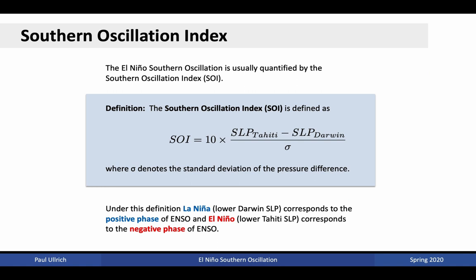The state of ENSO is usually quantified using an index such as the Southern Oscillation Index, although other indices are available that rely on variables such as sea surface temperature. The Southern Oscillation Index takes advantage of the fact that the sea level pressure minima and maxima shift during La Niña and El Niño conditions. Under La Niña conditions, we typically have lower sea level pressures in Darwin and higher sea level pressures in Tahiti. Darwin is our representative location in the western Pacific, over the maritime continent. Tahiti is our representative location for the central Pacific. These two locations are chosen because of the relatively long sea level pressure record. Both locations are located slightly south of the equator — Darwin at 12 degrees south and Tahiti at 17 degrees south.